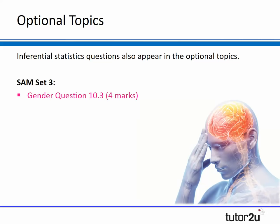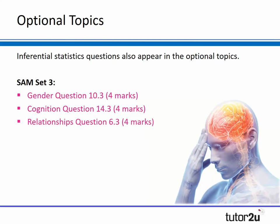Inferential stats doesn't only appear in the research methods topics. Looking at the sample assessment materials for Paper 3, AQA have included inferential stats questions in one of the option blocks — the block containing gender, cognition, and relationships — asking students to state a test and justify the decision. I wouldn't be surprised if AQA also put it in the year one taught topics such as social, memory, and attachment, so students need to be fully prepared for questions appearing within their optional topics.